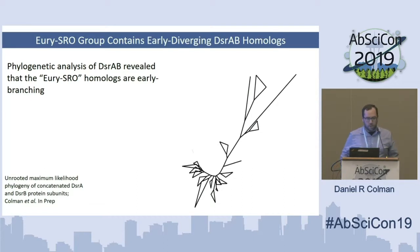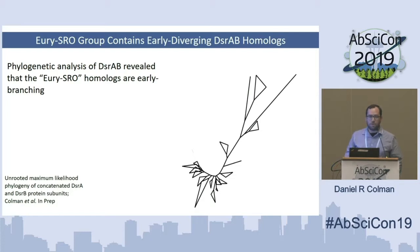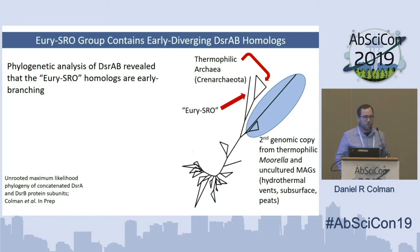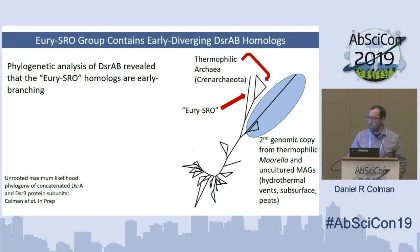The question we wanted to address is how these organisms inform about the evolution of SRO in general, in the context of other SROs. To do that, we reconstructed the evolutionary history of these DSR-AB enzymes. What I'm showing here is an unrooted phylogeny of a concatenation of DSR-AB homologs. Surprisingly, these URI SRO branch out very early on in the evolution of SRO, grouping with other thermophilic archaea from Crenarchaeota, in addition to some other unusual DSR-AB homologs including a second genomic copy from thermophilic Moorella — which are widely studied as acetogens — as well as DSR homologs from uncultured MAGs from hydrothermal vents, subsurface reservoirs, and peats.